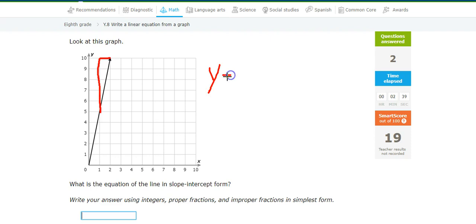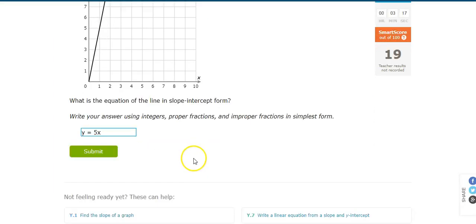And the intercept is at 0 plus 0. So I'm just going to go with y equals 5x plus 0. Get that in there. y equals 5x plus 0. I'm going to leave the 0 off. So y equals 5x.